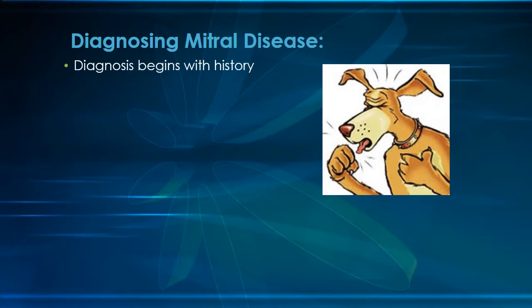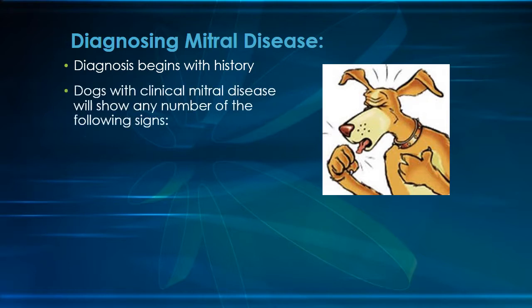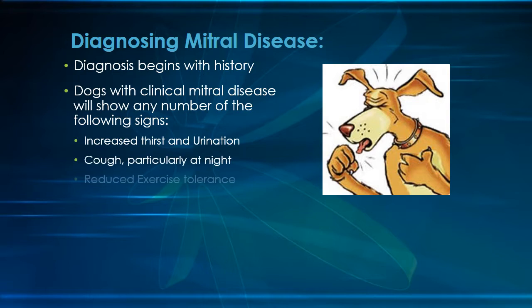When we are trying to diagnose a pet with mitral insufficiency, we start with the owner's history. Most pets with mitral disease will show symptoms including increased thirst and urination, coughing frequently at night, reduced exercise tolerance, and as things progress, labored breathing. If any combination of these symptoms are occurring, we have to consider the heart as a possible cause.